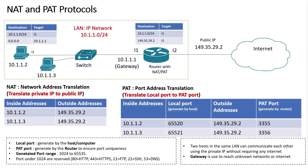Here we have some additional information. The local port is generated by the host. The PAT port is generated by the router to ensure port uniqueness. The generated port range is in this range. The ports under 1024 are reserved ports. For example, port 80 is for HTTP. Two hosts in the same LAN can communicate with each other using the private IP without requiring internet. A gateway IP is used when a host wants to reach the internet or another network. That's all for this session, and I hope that now you have a good understanding of the main components of a local area network.